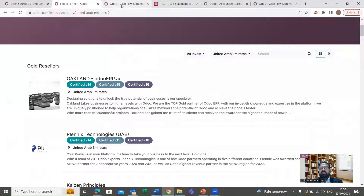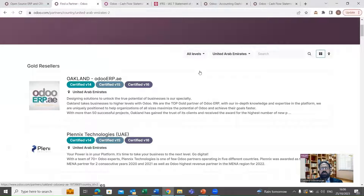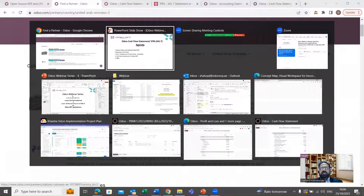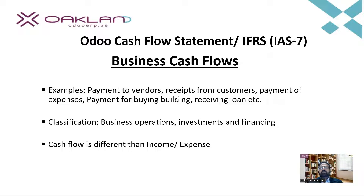The next item on the agenda is to know about the business cash flows. What are the different cash flows in business? For example, payments to vendors — this is cash outflow. Receipts from customers — this is cash inflow. Payment of expenses like salaries or other expenses is also a cash outflow. There are other examples like buying assets such as buildings, or receiving a loan. All these cash flows are classified in different categories.